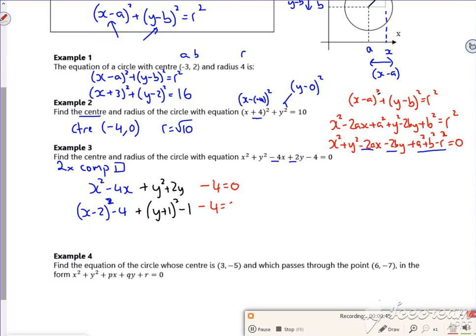Minus 4 is equal to 0. So now if I collect the numbers together, I've got x minus 2 squared, I've got y plus 1 squared, I've got a minus 9 on the left, but I'm going to take it over onto the right hand side.